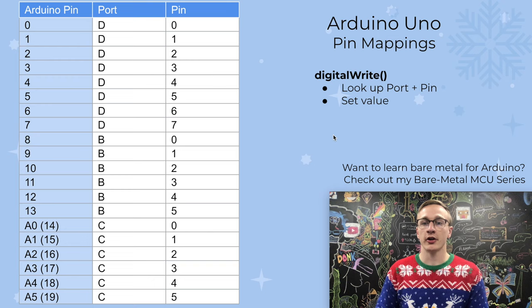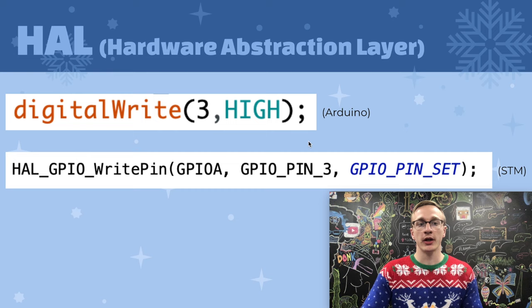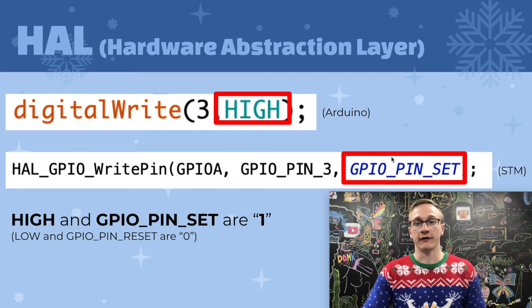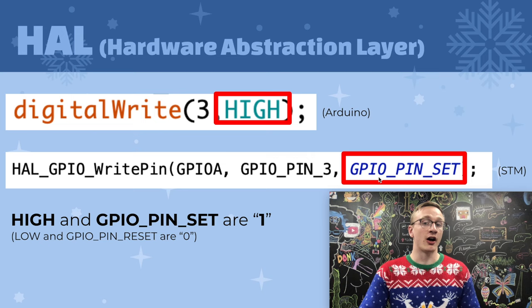The STM32 HAL actually runs quite a bit faster than Arduino's digitalwrite, because it doesn't have to spend time looking up the port and pin — you have to tell it the port and pin directly. The last thing we have to specify is whether we want the pin on or off. In Arduino, we can say HIGH or LOW, or even 1 or 0. For STM, we say GPIO_PIN_SET or 1 to turn it on, or GPIO_PIN_RESET or 0 to turn it off.